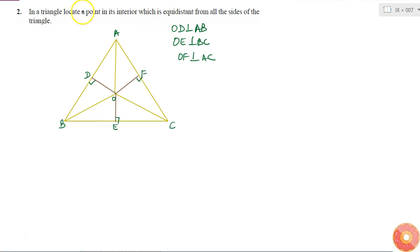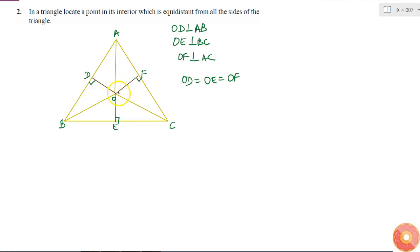If O is equidistant from all the three sides, that means OD is equal to OE is equal to OF. Using these properties, I have to find a way in which I can actually locate point O just given the triangle ABC. That is the question.